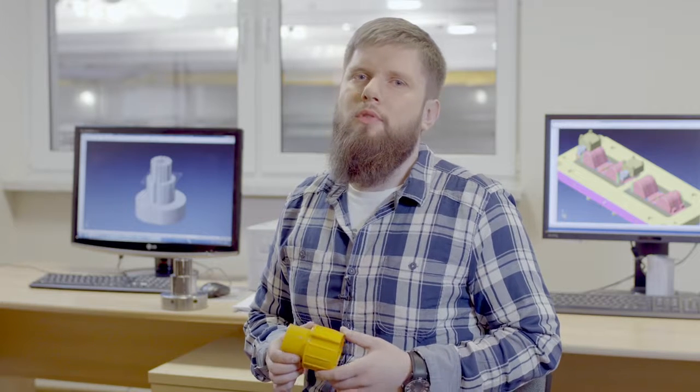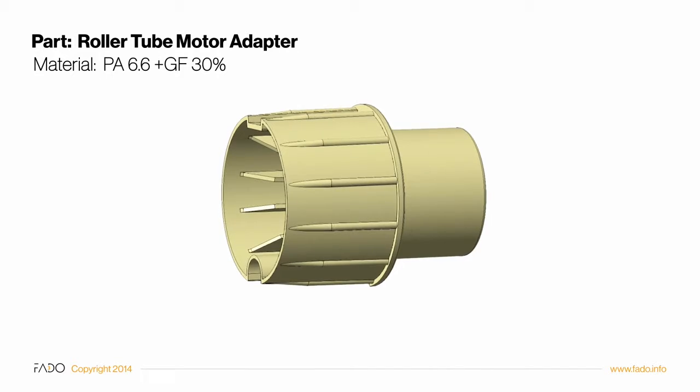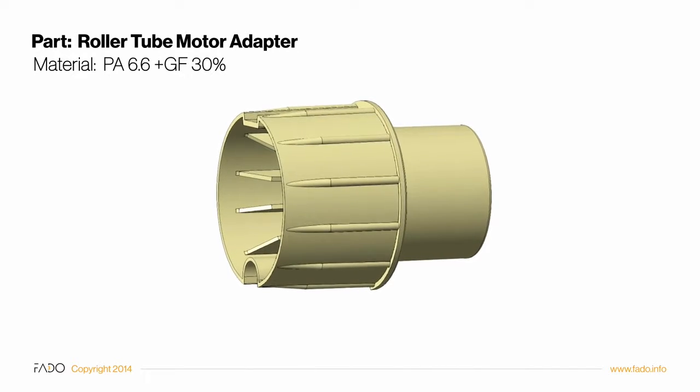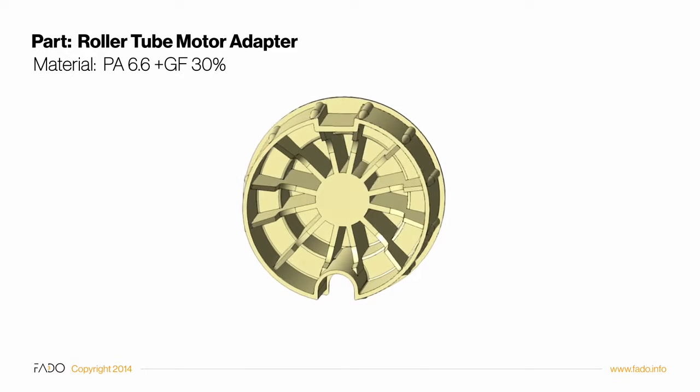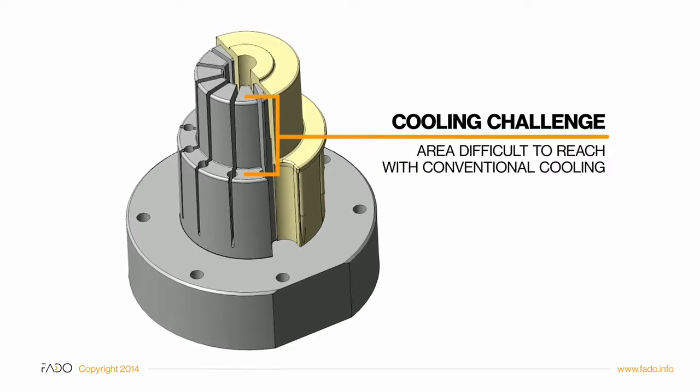One of conformal cooling application examples is a relative motor adapter, a part we produce for one of our clients. In this particular example, high ribs inside the part make it difficult to achieve uniform temperature distribution on the whole molding surface.